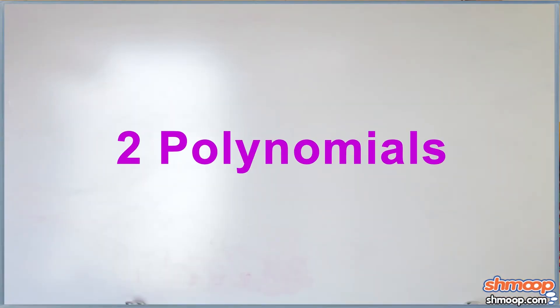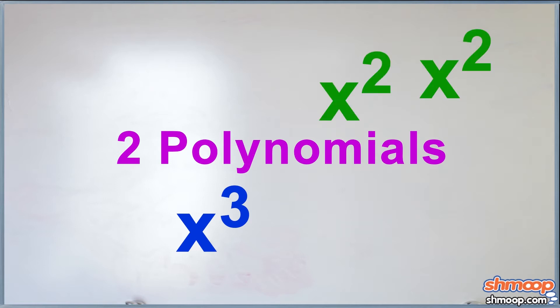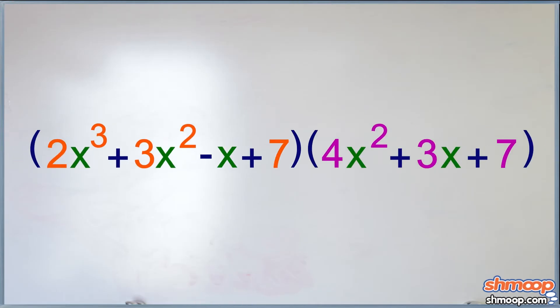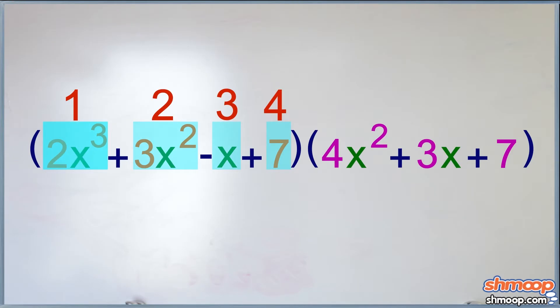Say you have two polynomials with multiple terms. Like, there's an x cubed in there, and a couple of x squareds, some x's, and so on. Something like these two. Well, to multiply them, we have to be sure to multiply every term in the first polynomial by every term in the second polynomial.